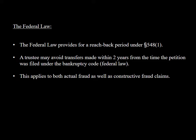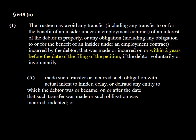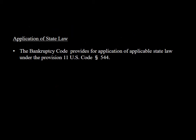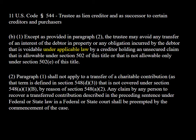The reach-back period in 548.1 is two years from the date of the petition. Generally speaking, it's two years for both actual and constructive fraudulent conveyance claims. However, the trustee can also apply applicable state law under 544 — that's the statute that allows the application of applicable state law.